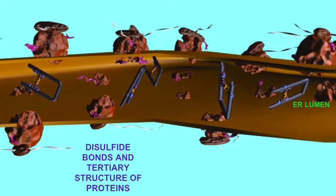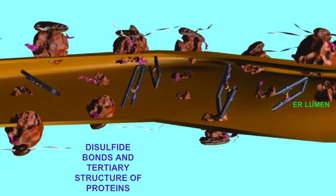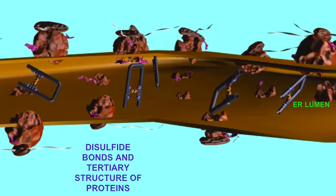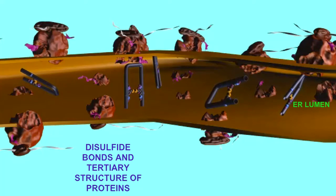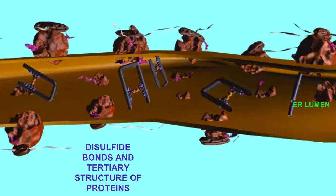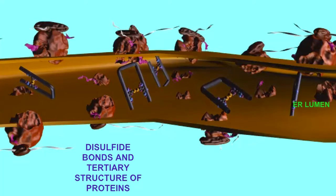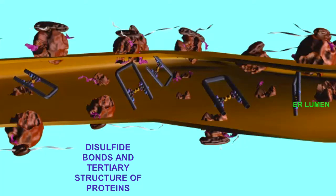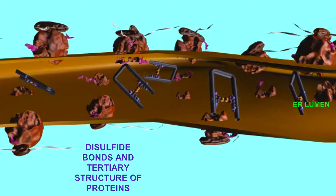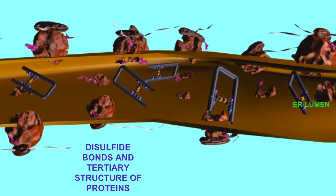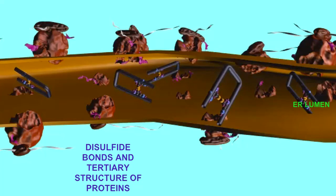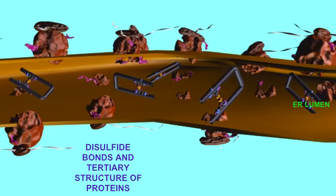Since the endoplasmic reticulum is primarily the site where membrane proteins, lysosomal proteins, and secreted proteins are translated, this type of bond — the disulfide bond — is most common in lysosomal proteins, in secreted proteins, and in the portion of membrane proteins which faces the exterior of the cell.